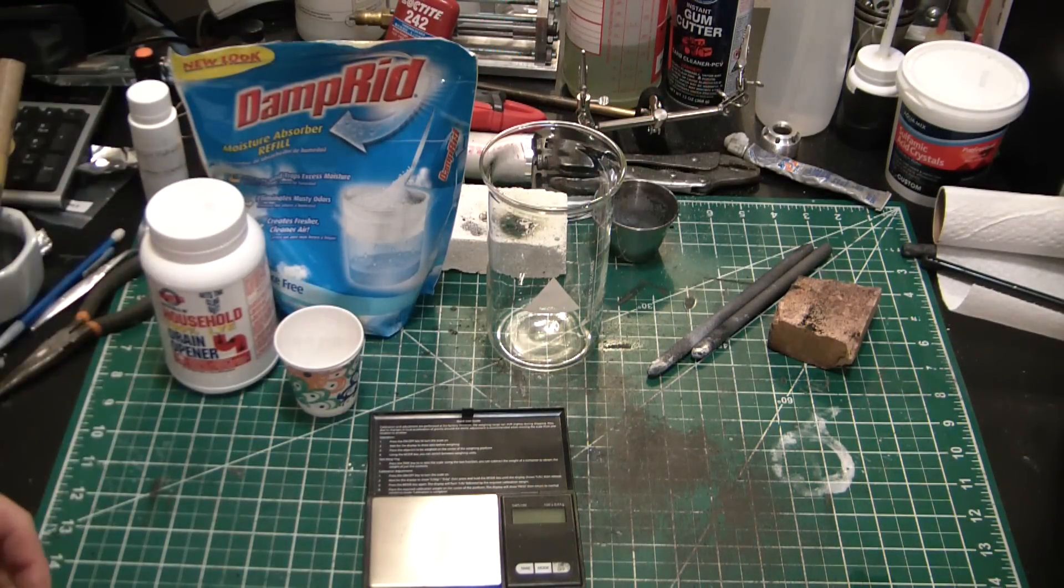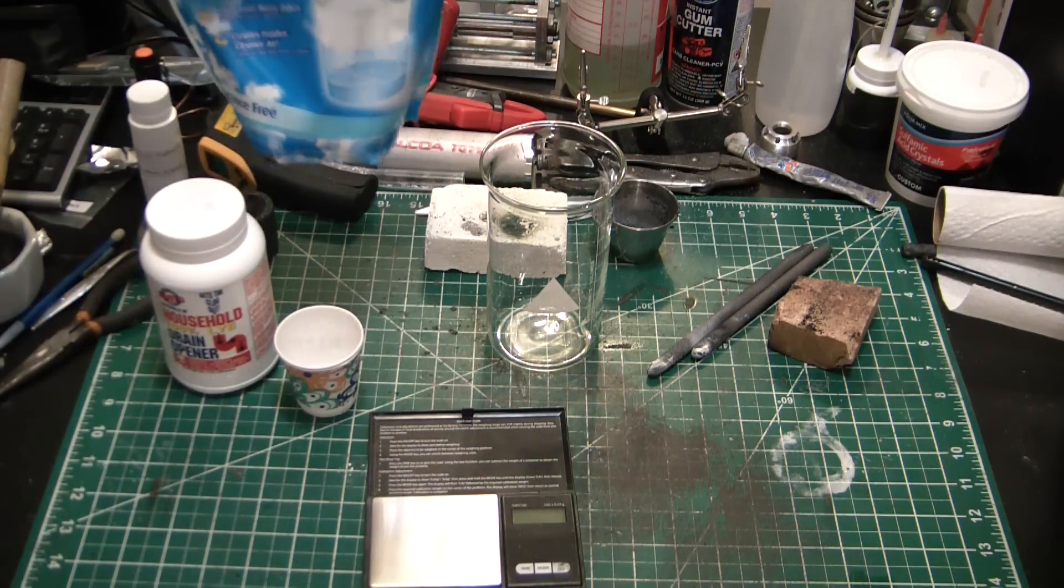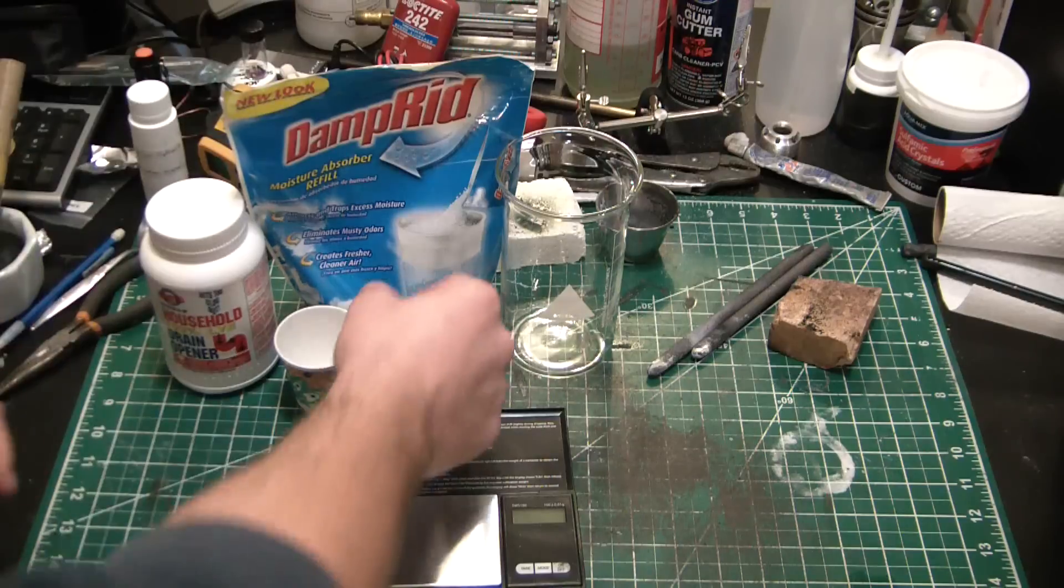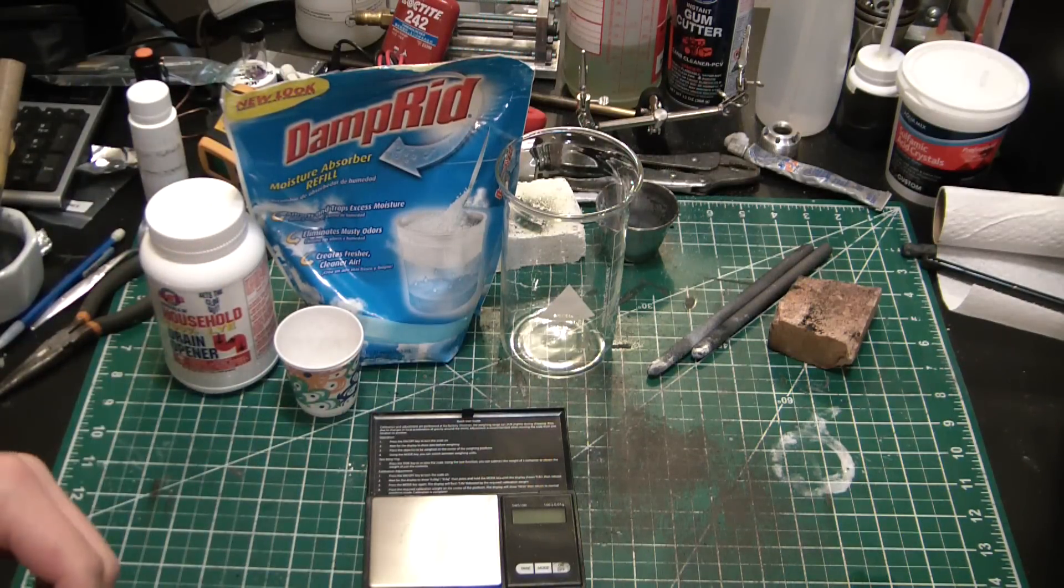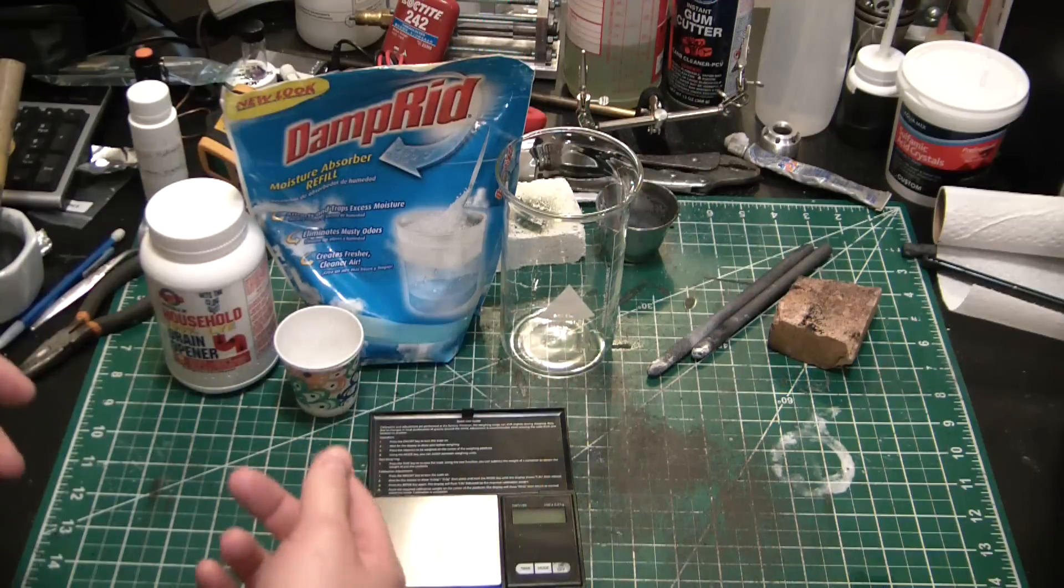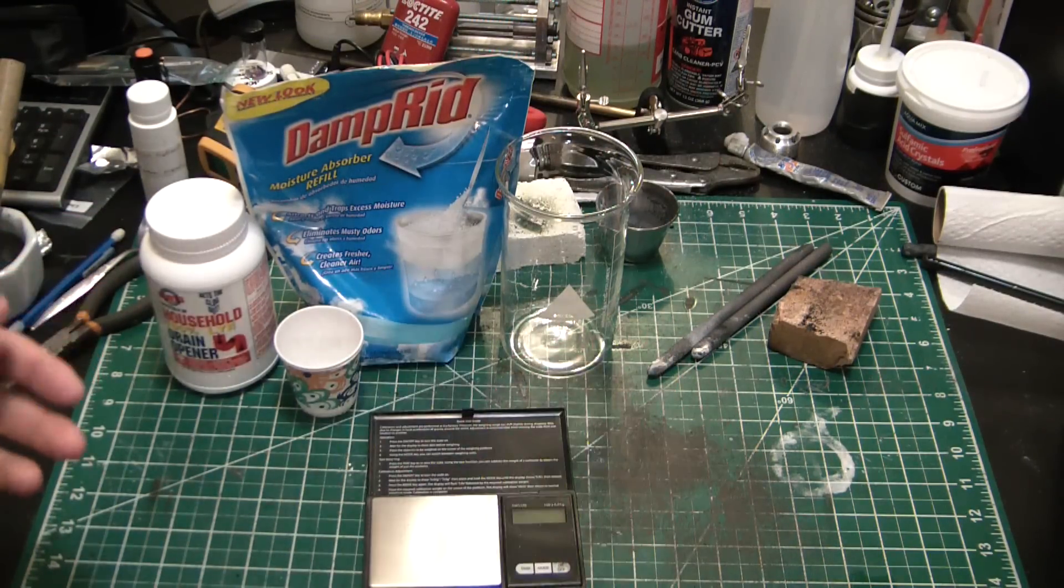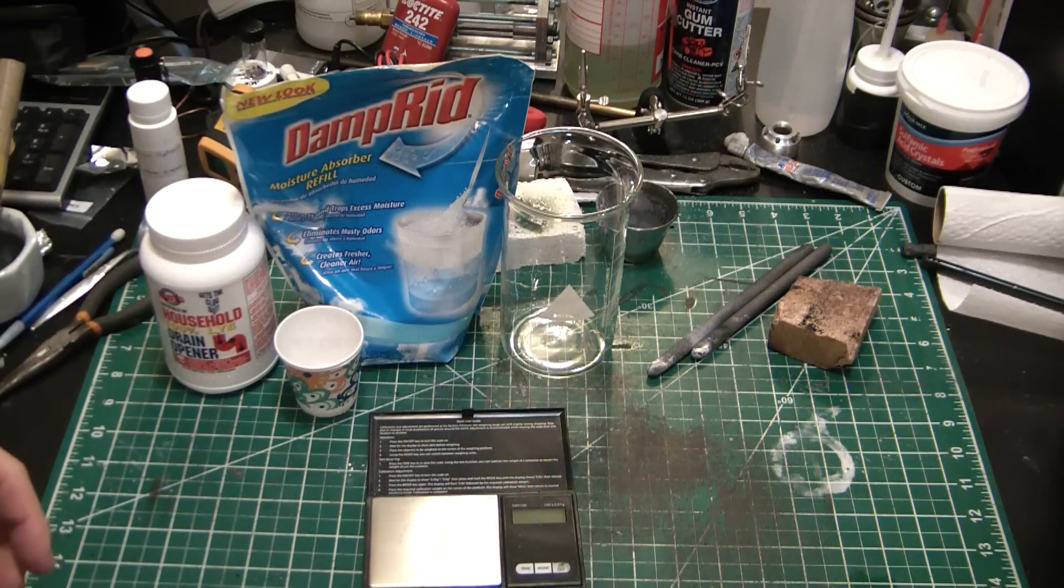What we're going to do is a 60:40 mass ratio of calcium chloride to sodium hydroxide. I'm going to double it up, get them both in solution, and then just do the quick double displacement right in here. Let it settle out, give it a couple washes, and we'll have some pretty pure calcium hydroxide at that point. So let's get to it.